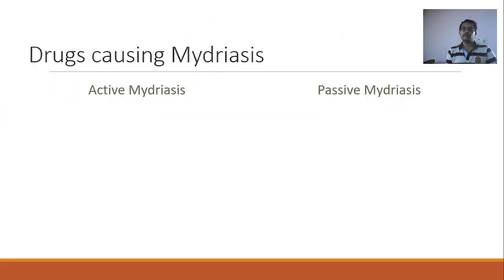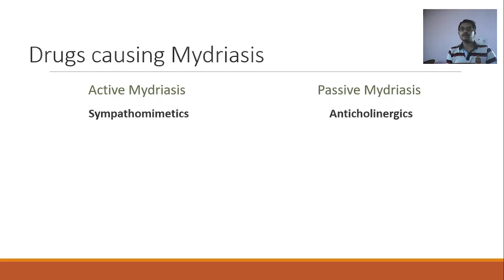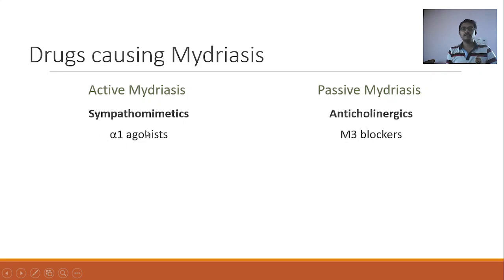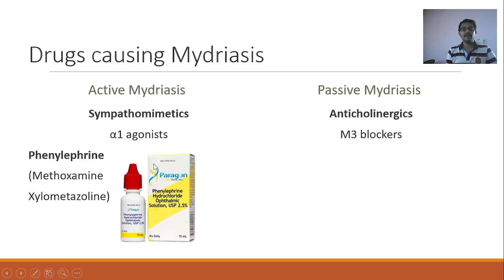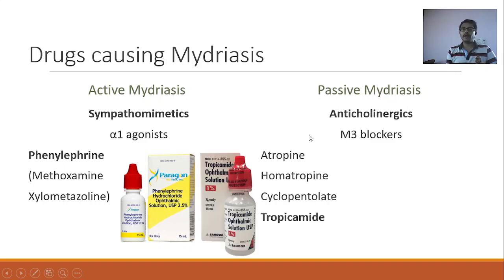Let us see which drugs produce mydriasis. Active mydriasis is produced by sympathomimetics — specifically alpha-1 agonists. Passive mydriasis is produced by anticholinergics — specifically M3 blockers. For active mydriasis, we use phenylephrine. Methoxamine and xylometazoline are also alpha-1 agonists but are used for other conditions. For passive mydriasis, there are M3 blockers including atropine, homatropine, cyclopentolate, and tropicamide. But we use only tropicamide for producing passive mydriasis in practice; we do not use atropine, homatropine, or cyclopentolate. The reason is the duration of action.